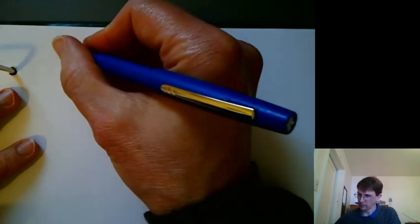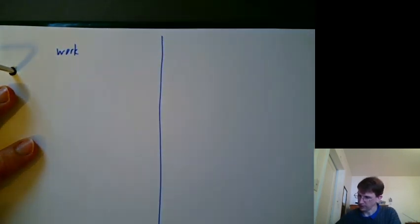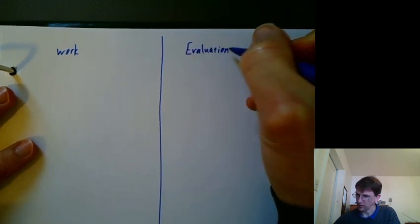All right, let's talk about how to format the homework. So what I want you to do for your homework is, on one side of the paper, write what your work is, draw a big dividing line, and then do an evaluation of your work.